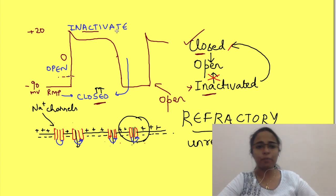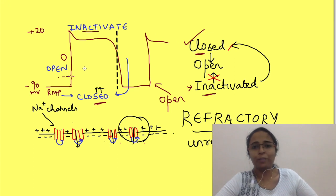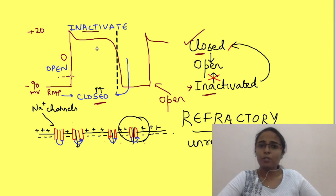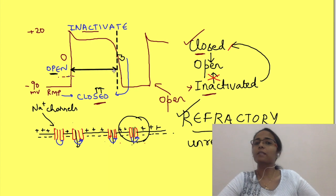Now, from the beginning of phase 0 to almost half of phase 3 of action potential in cardiac contractile cells, the cells are refractory. Because in phase 0, the channels are already open. They cannot open any further. And after that till half of phase 3, they are inactivated. So, this period from phase 0 to half of phase 3 is known as absolute refractory period or effective refractory period.